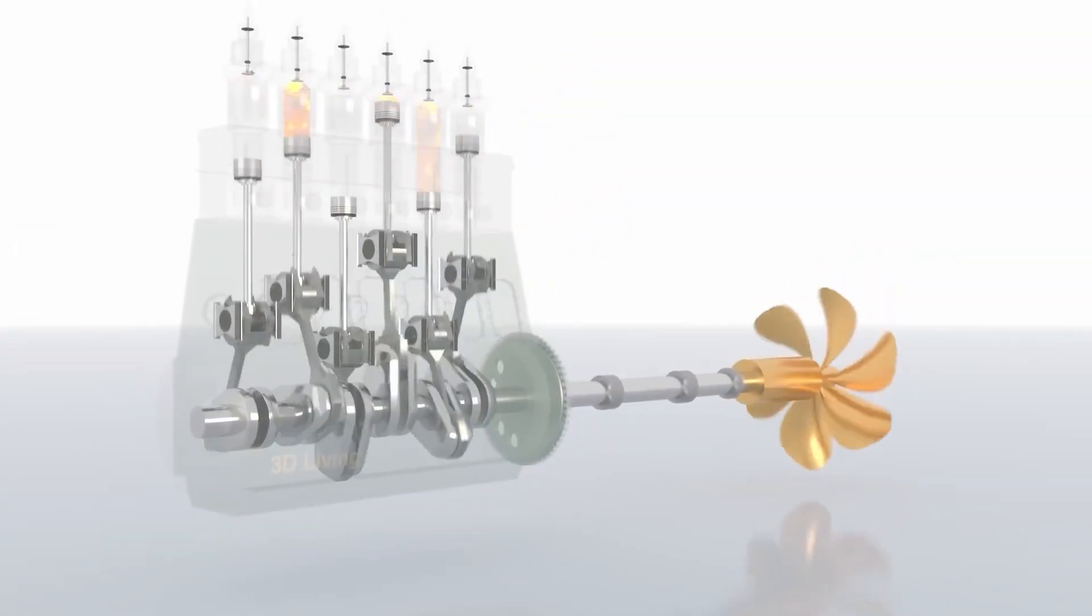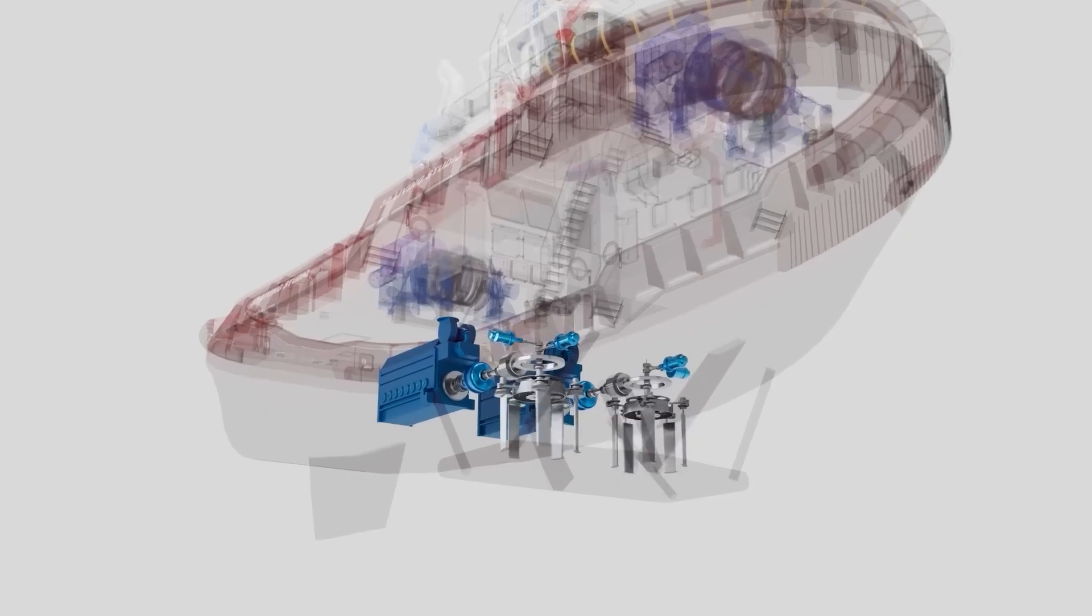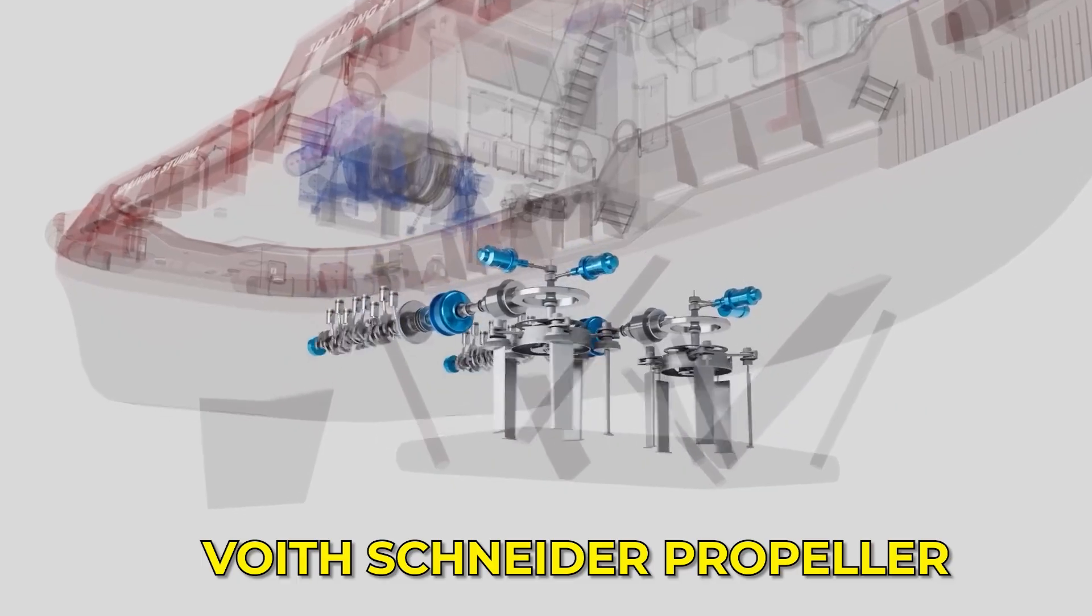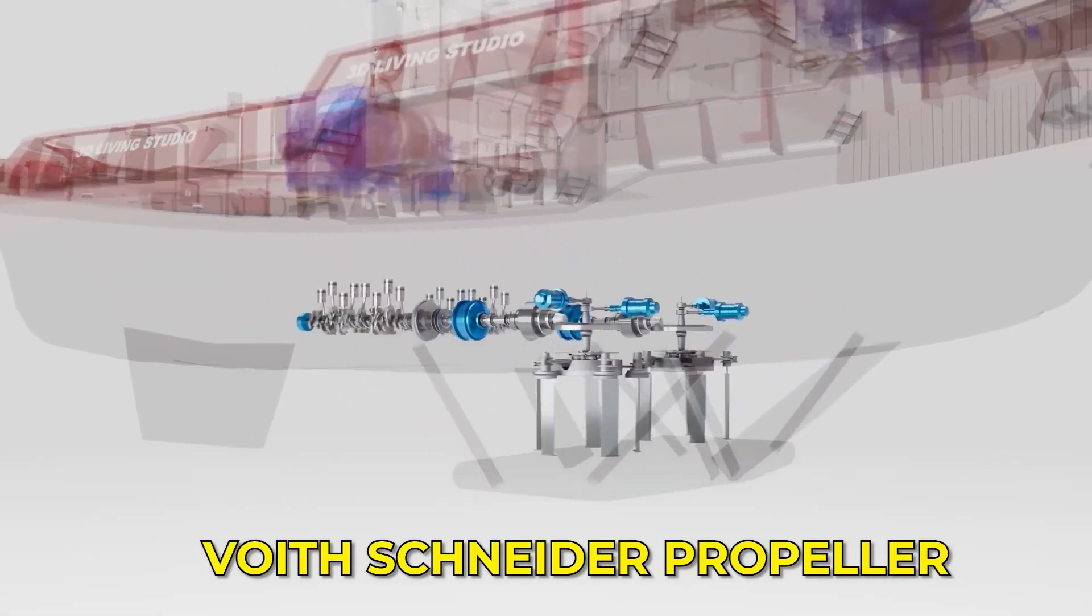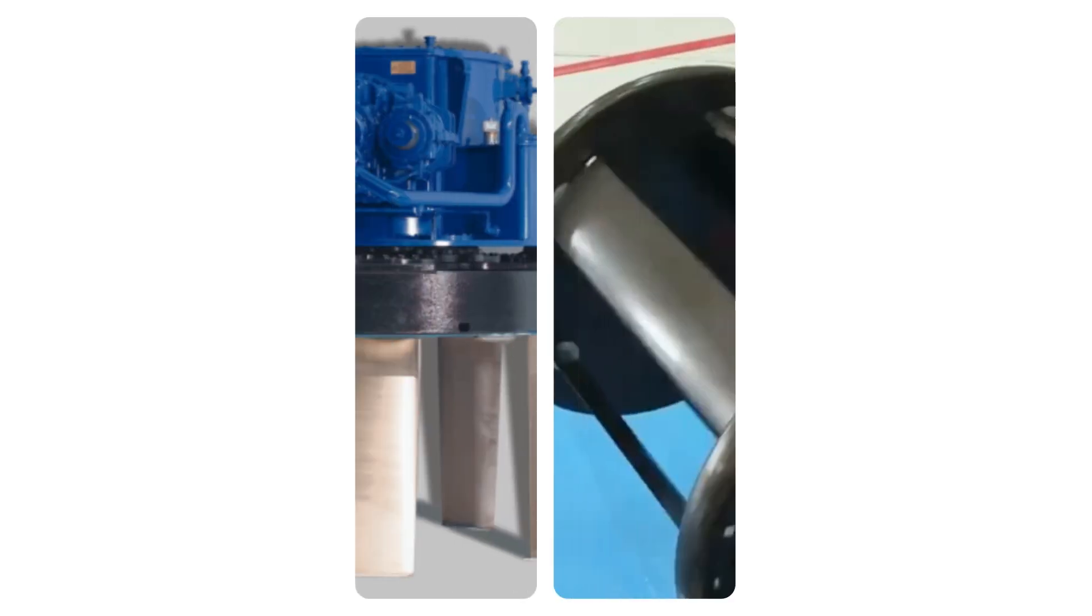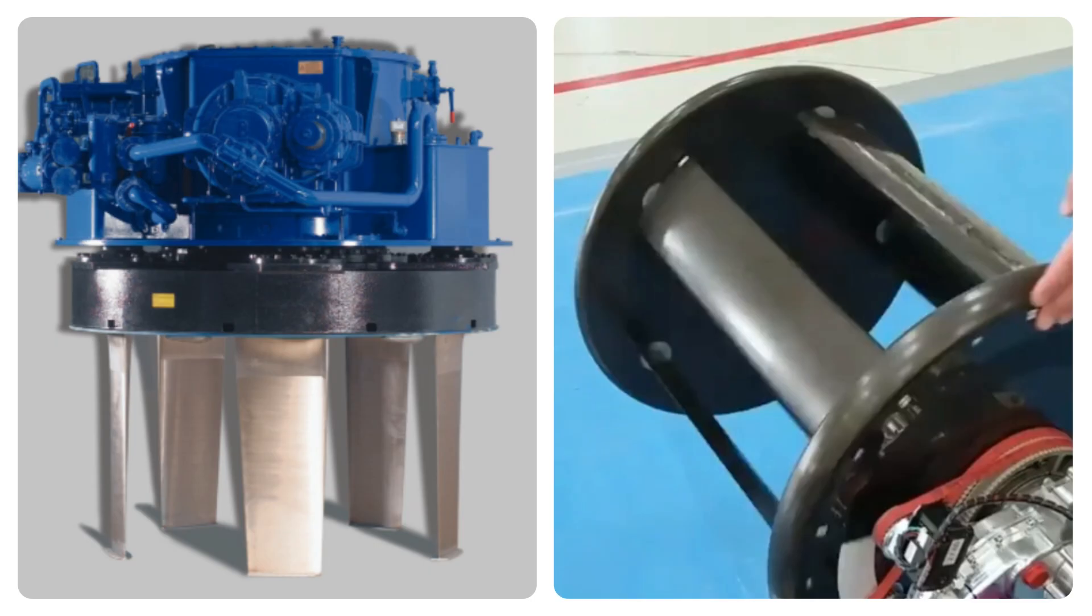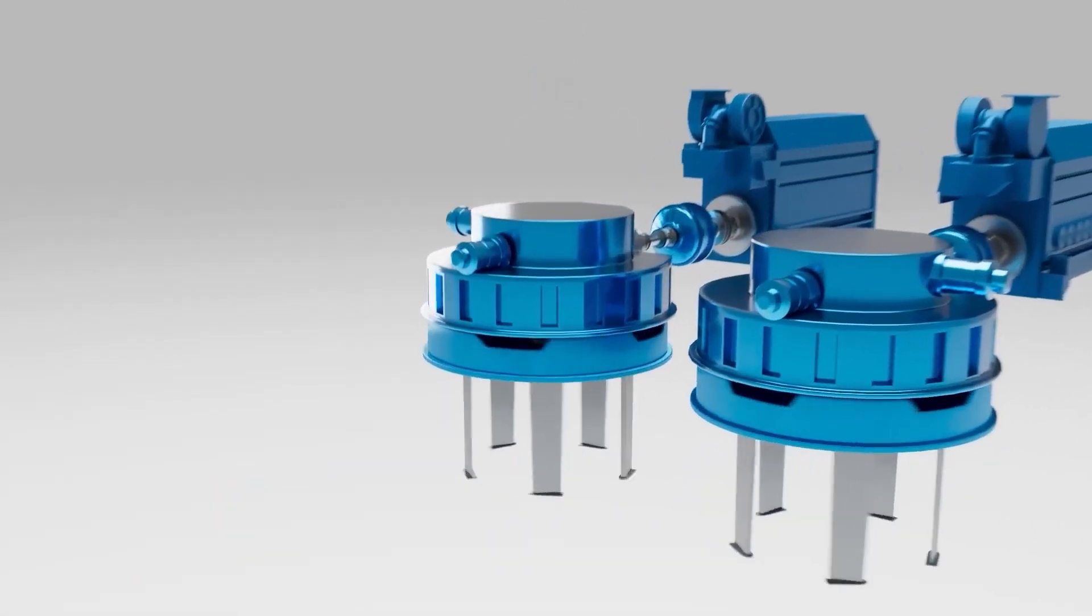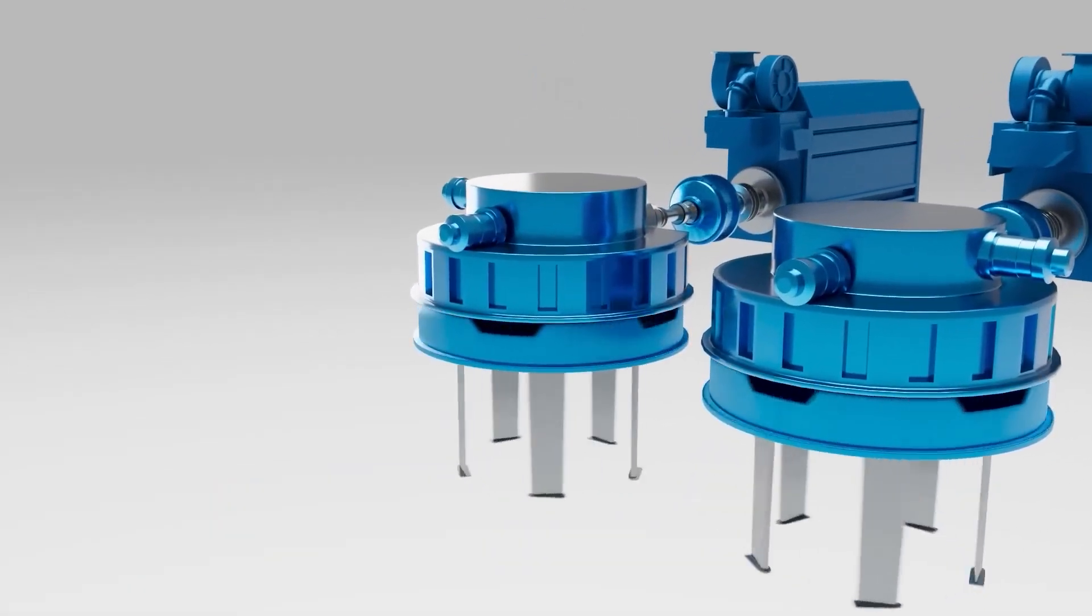What's most fascinating about this evolution is how the boundaries between marine and aerial propulsion are beginning to blur. The same engineering principles that once guided the Voith Schneider propeller under the sea are now being applied to electric aircraft above it. Both rely on dynamic control of blade angles, both use electric motors for instantaneous response, and both aim to maximize efficiency through intelligent design rather than sheer power.